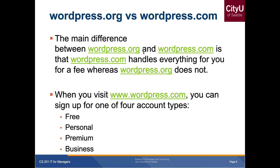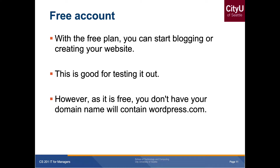The difference between WordPress.org and WordPress.com is that .com handles everything for you for a fee, whereas .org does not. Just FYI, this is not true for all websites — it's specific to how WordPress designed it with these top-level domains. When you visit WordPress.com, you can choose from four types of accounts: free, personal, premium, and business. With the free account you can start blogging and testing, but your URL will contain 'wordpress.com' and you don't have to pay for a domain name.